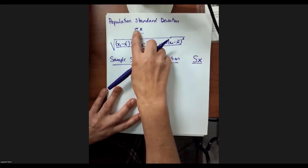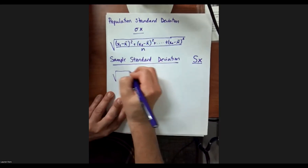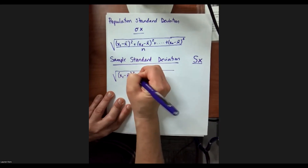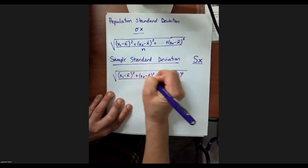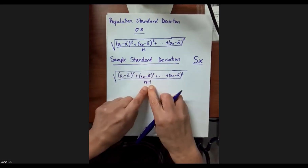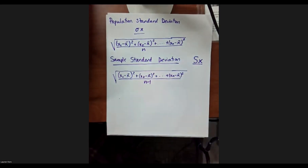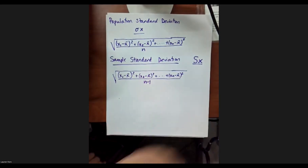What your online homework is going to ask you for is the sample standard deviation, and that's Sx. When your online homework asks you to compute the standard deviation, they're going to want the Sx value, not the sigma x value. The difference is: instead of dividing by N, we divide by N minus 1. That gives us wiggle room for error, because your sample data is going to be a lot closer to the mean than if you generalize to the entire population.